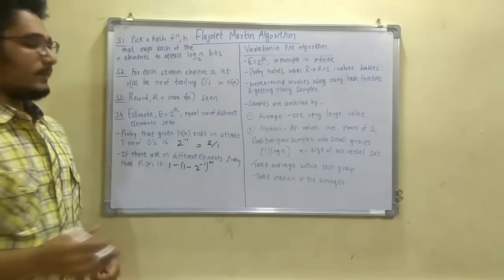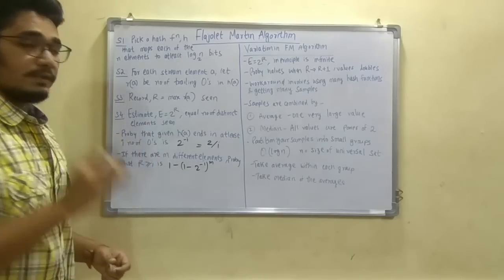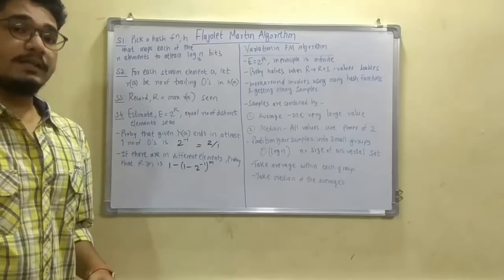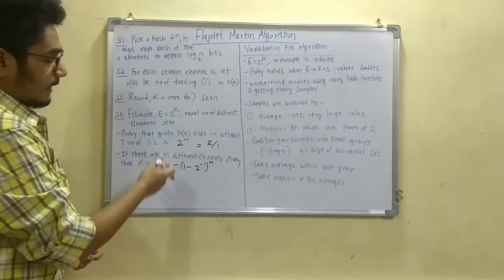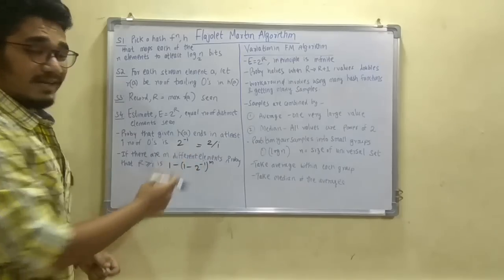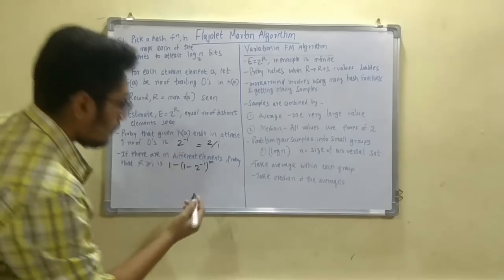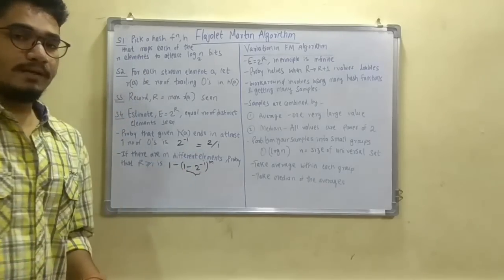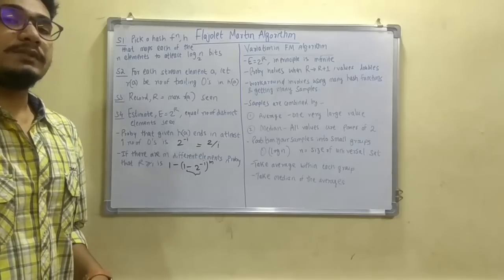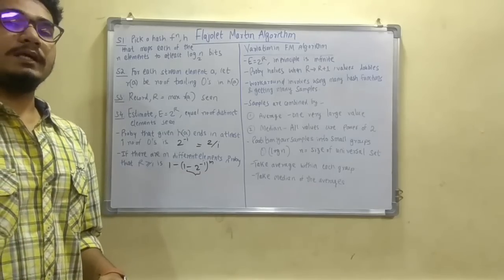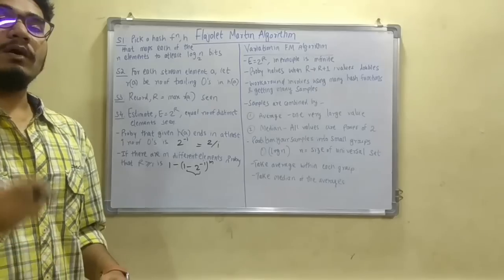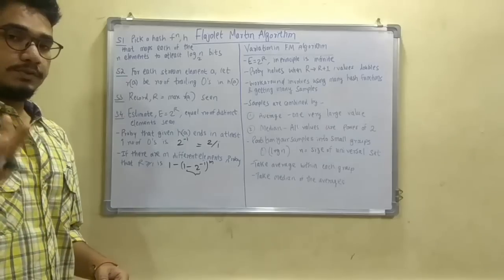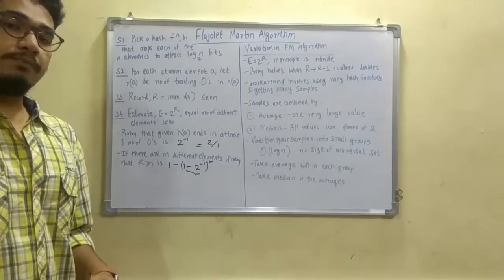So that probability is 2 raised to minus i. Next, if there are m different elements, then the probability that the record R is greater than or equal to i is given by 1 minus (1 minus 2 raised to minus i) raised to m. Keep in mind that the expression (1 minus 2 raised to minus i) is the probability that a particular hash function — whether MD5, SHA, or any other hash function — ends in fewer than i zeros.